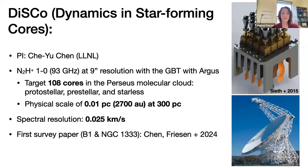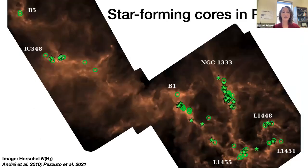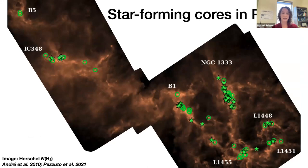The first survey paper targeting two regions in Perseus just came out and is available on ADS. Perseus is about 300 parsecs away and has a range of star-forming environments, from the clustered region NGC 1333 to more quiescent regions. It's forming low-mass stars. The initial data release and paper focuses on B1 and NGC 1333, with targets spanning a range of regions across the Perseus molecular cloud.